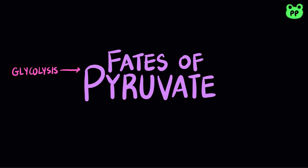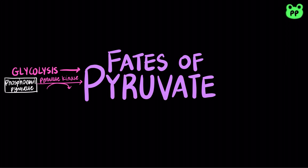Pyruvate is the end product of glycolysis. It is formed from dephosphorylation of phosphoenolpyruvate by pyruvate kinase. After glycolysis, pyruvate has four major fates.